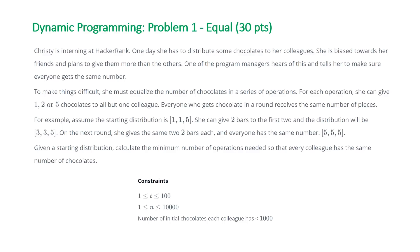The problem states: Christie is interning at HackerRank. One day she has to distribute some chocolates to her colleagues. She is biased toward her friends and plans to give them more than the others. A program manager tells her everyone must get the same number. She must equalize chocolates through operations where she can give one, two, or five chocolates to all but one colleague. Everyone who gets chocolates in a round receives the same number. The constraints are: t between 1 and 100, n between 1 and 10,000, and initial chocolates per colleague less than 1,000.